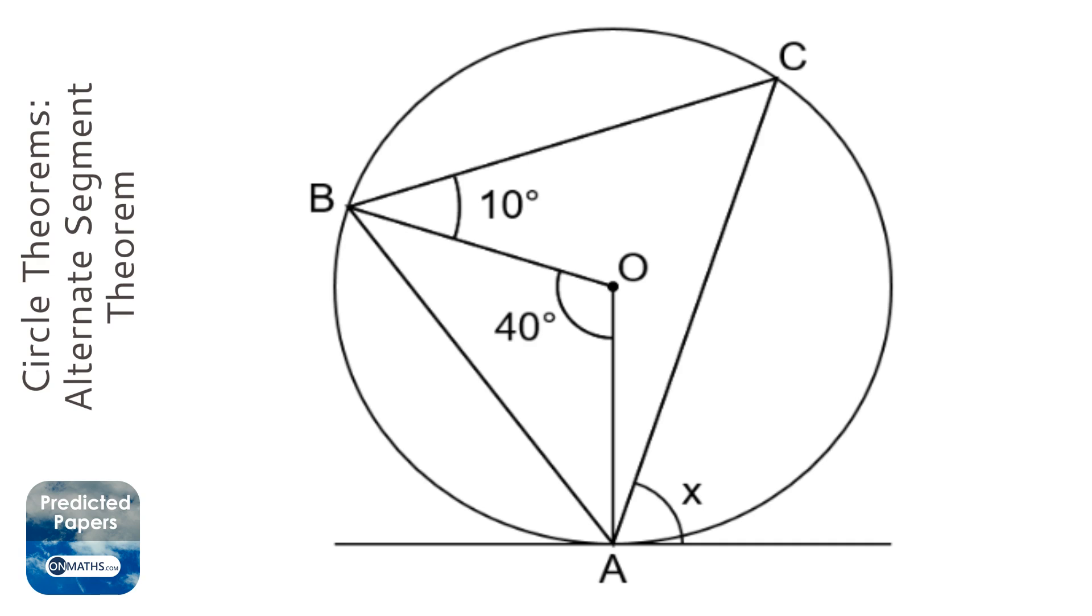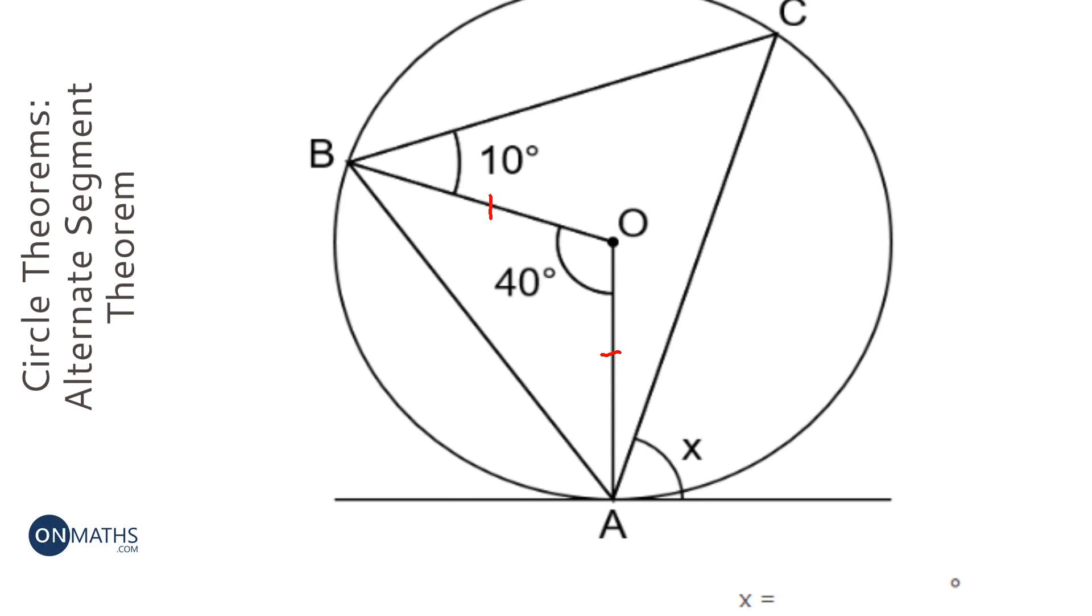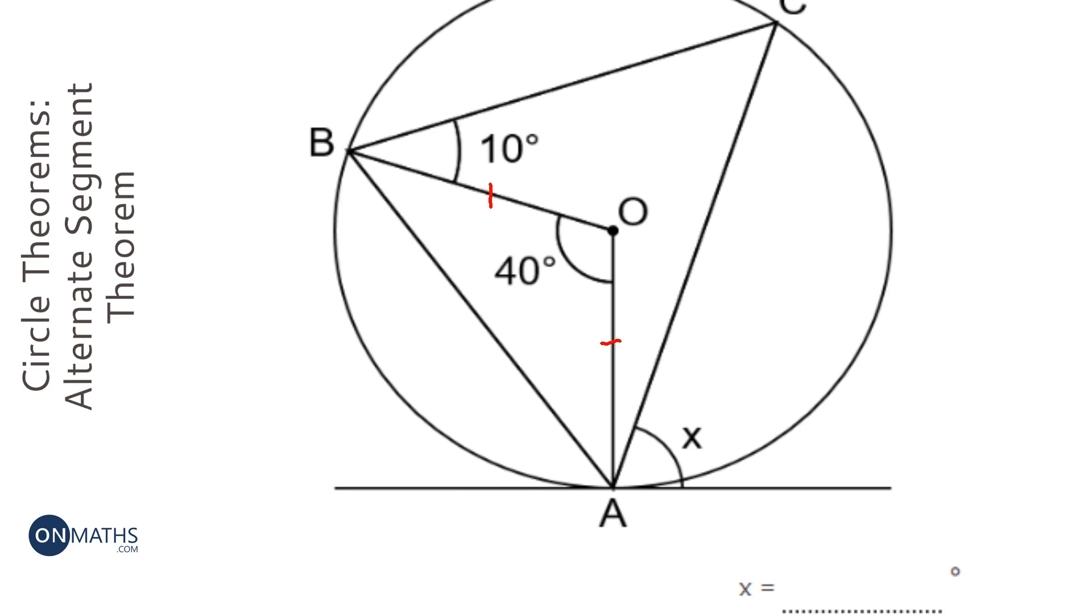So the first thing I notice with this question is we have an isosceles triangle here because they're both radii. So that's an isosceles triangle, so we know that the bottom two angles are equal. Therefore, to work them out...